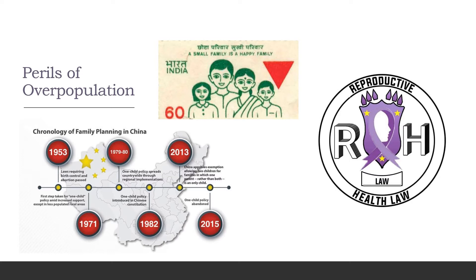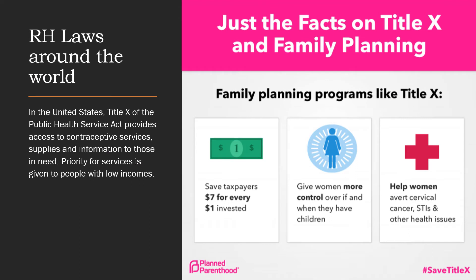This argument became the basis for government population control programs worldwide. In the mid-20th century, the Philippines, China, and India sought to lower birth rates on the belief that the free expansion of family members would lead to a crisis in resources, resulting in widespread poverty, mass hunger, and political instability. A number of policies have been implemented worldwide to curb the population. In the United States, Title X of the Public Health Service Act provides access to contraceptive services, supplies, and information, with priority given to people with low incomes, and family planning clinics located in low-income neighborhoods.